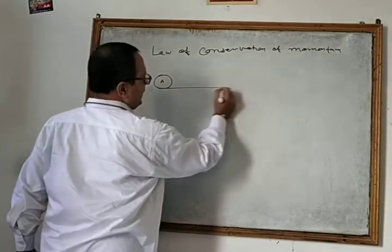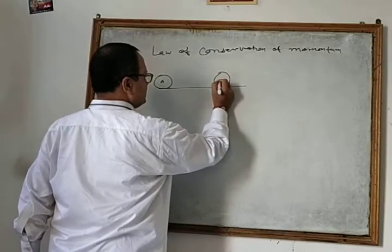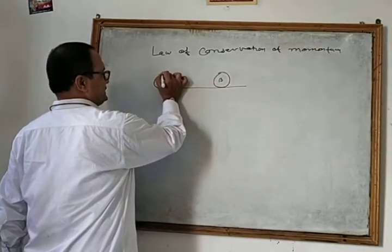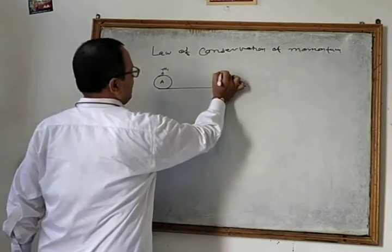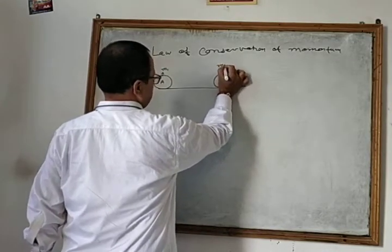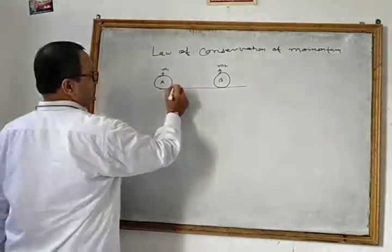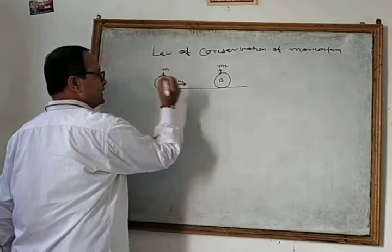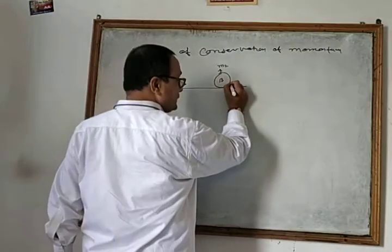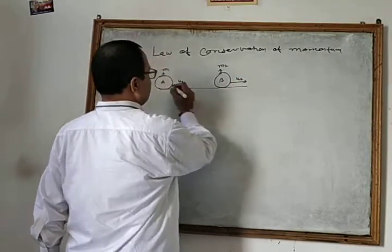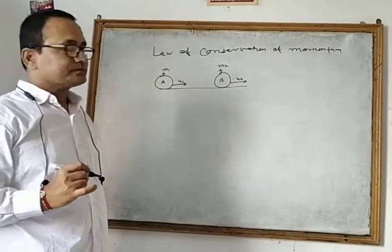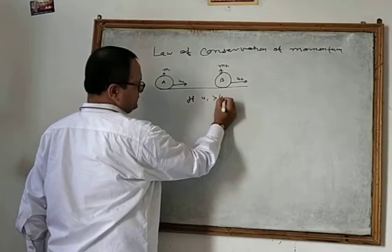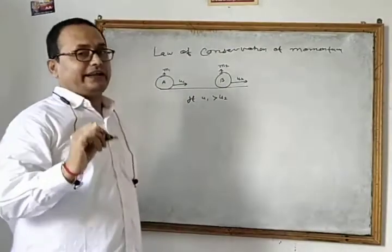One object is A and the other object is B. Two masses: this mass is M1 and this mass is M2. Object A moves with initial velocity U1 and object B moves with initial velocity U2. U1 is greater than U2.